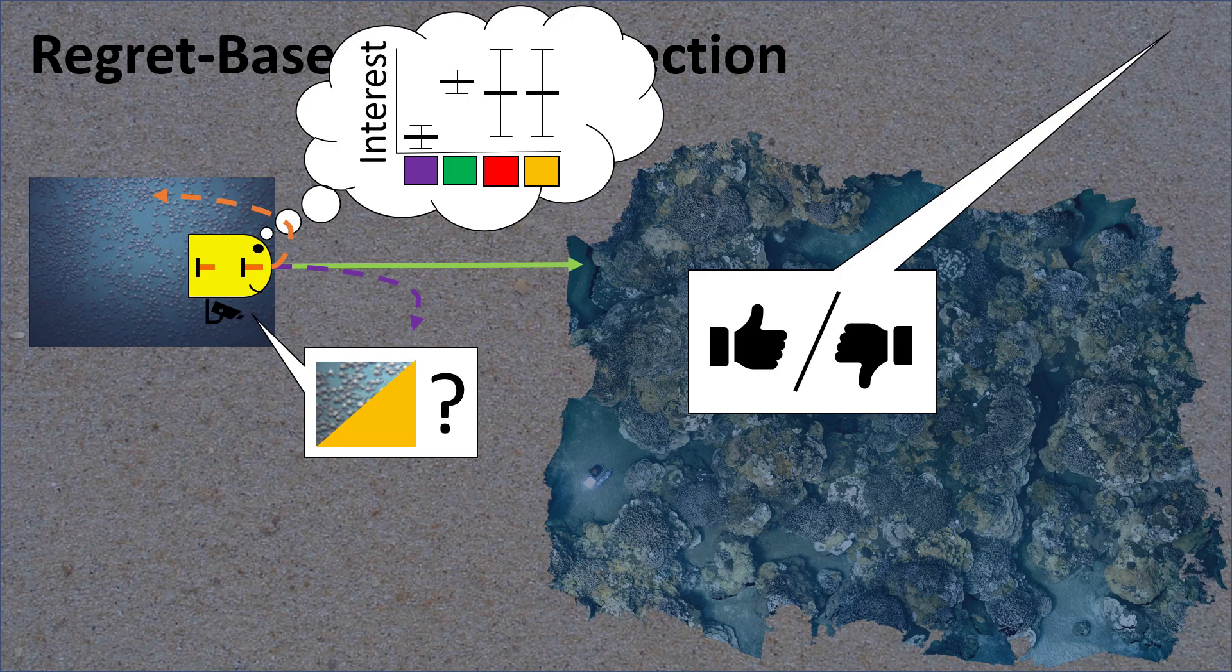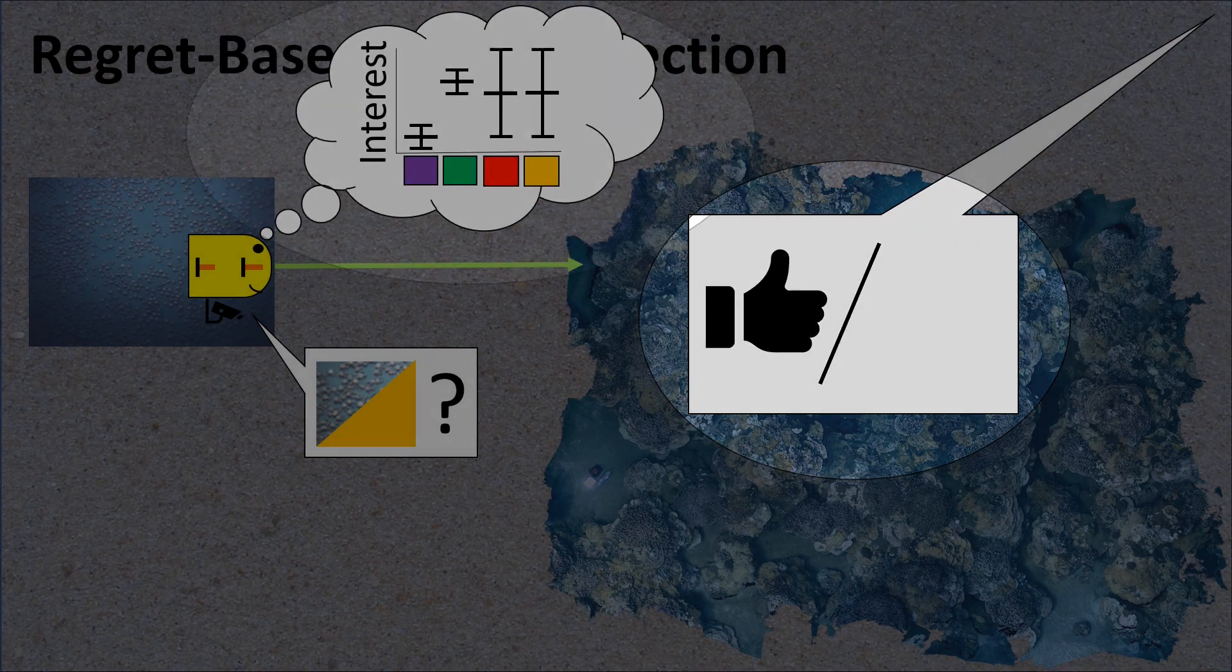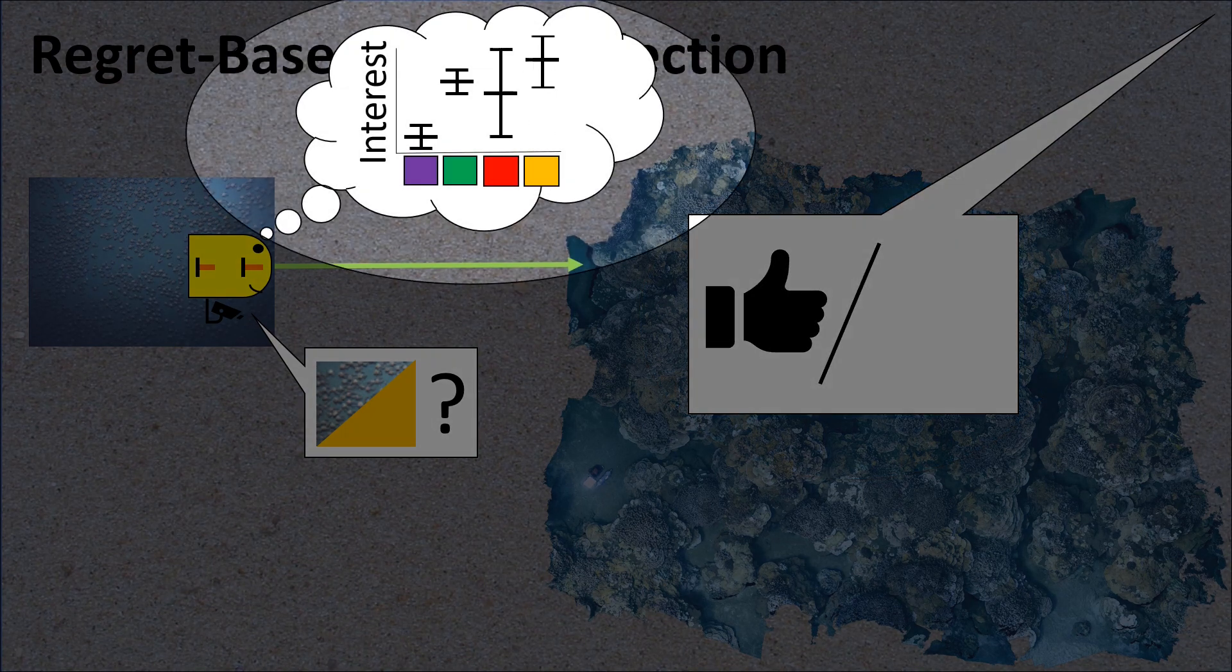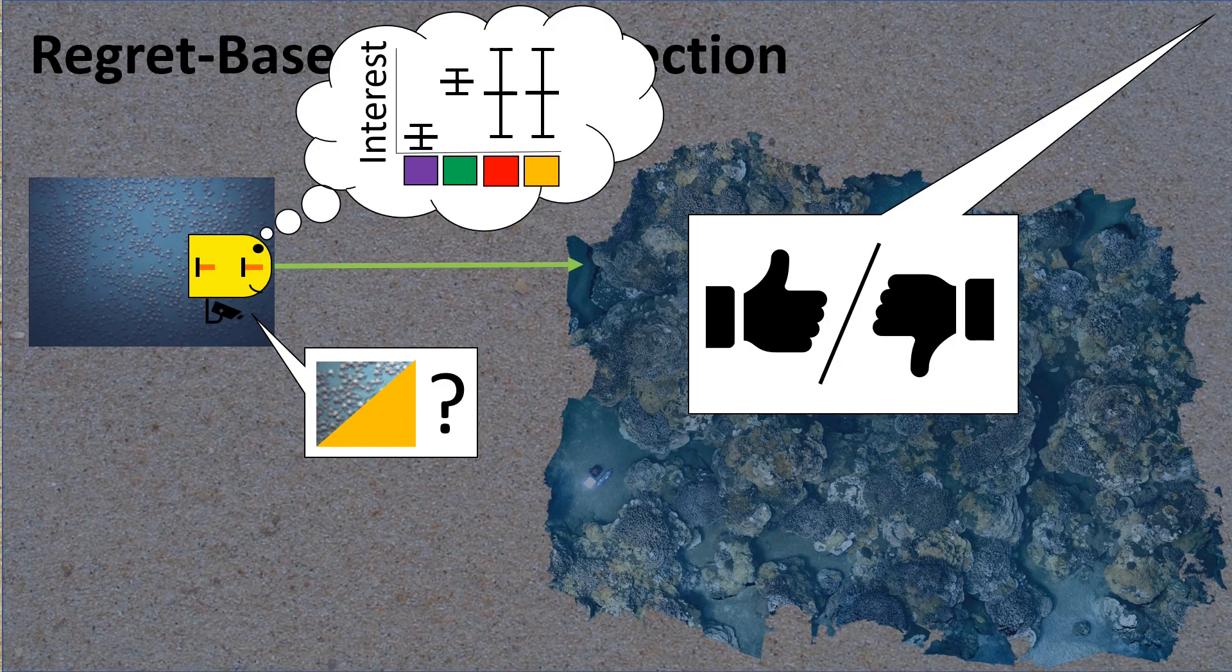Why? If the robot wrongly assumes that crabs aren't interesting to the scientist, it might be throwing away a very rare and valuable opportunity to observe a unique phenomenon.